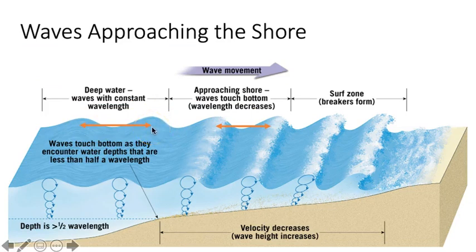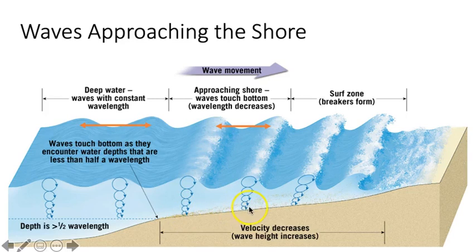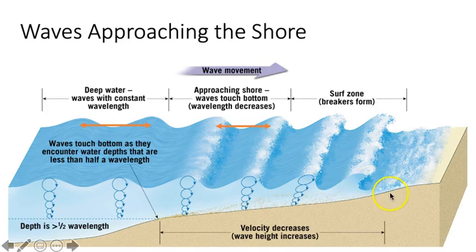As a wave approaches the shore, it senses the bottom when it reaches a depth that is about half its wavelength. As the wave interacts with the bottom, it slows down due to friction. As it slows, it grows in height, eventually becoming too steep to hold itself up, and it breaks forward, making the crashing waves that we see along a beach.